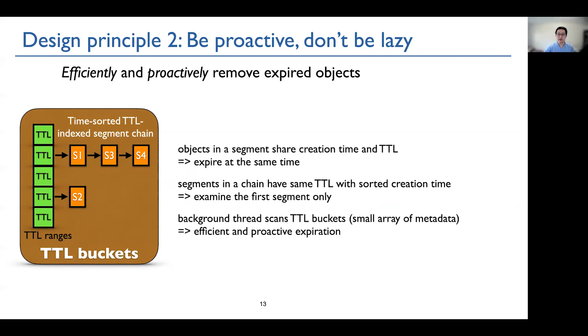It uses a background thread to scan these TTL buckets every second, and remove the expired segment. And the TTL bucket is a very small array of metadata, and it can fit in the CPU cache. So scanning this small array is very efficient.